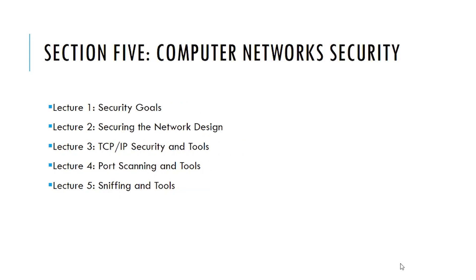Section 5 is the introduction to computer network security, and the rest of the sections are all about security. Lecture 1 introduces the security goals. Lecture 2 shows how securing the network starts from the point of designing the network. Lecture 3 shows the security issues found in the TCP/IP protocol suite and the tools that can craft some packets. Lecture 4 shows the concept of port scanning and the tools used for it. Lecture 5 shows the concept of sniffing, the tools used in sniffing, and how sniffing can be beneficial for securing the network if done with permission.